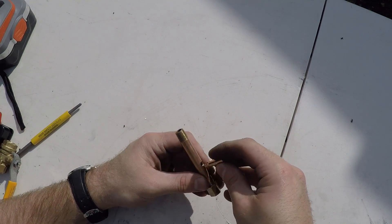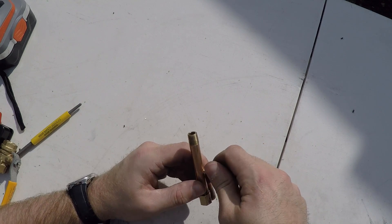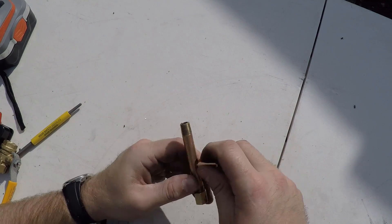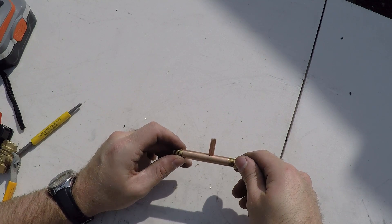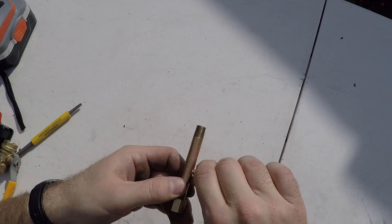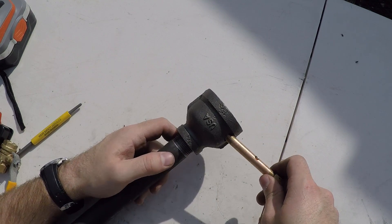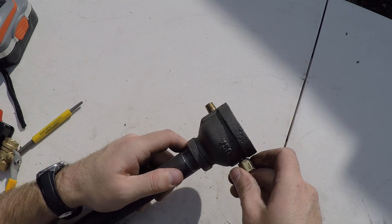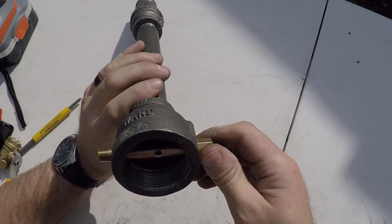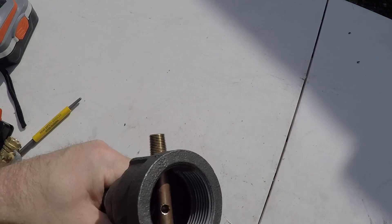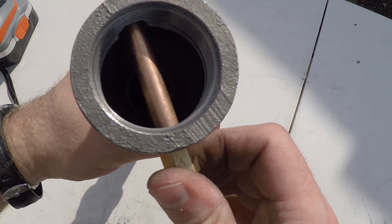Next we can test fit the MIG tip. And it threads in nicely, relatively square. For final assembly, remove the MIG tip and you're going to insert the pipe back into the fitting. Check for alignment. The hole should center up with the main body of the pipe. Then you can turn it 180 degrees, line it up.